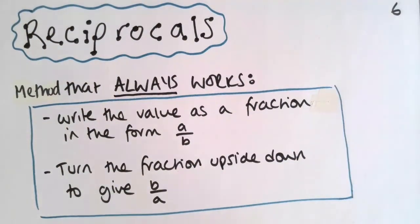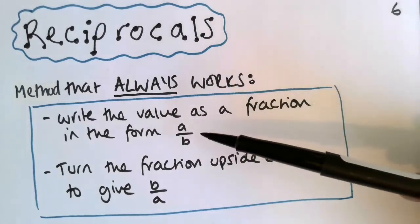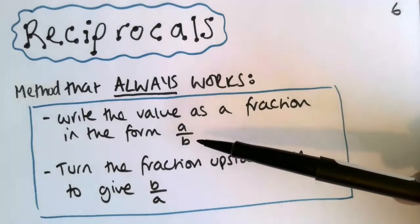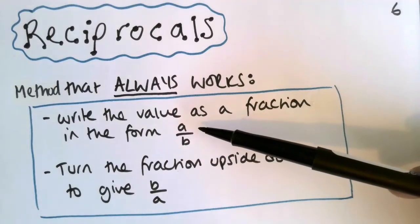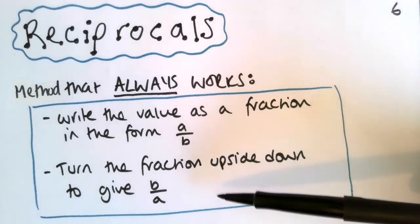So if you have whatever number it is and you write it as a fraction in the form A over B, so say for example your number was 3, 3 as a fraction is 3 over 1, then if you just turn your fraction upside down, that will be the reciprocal.